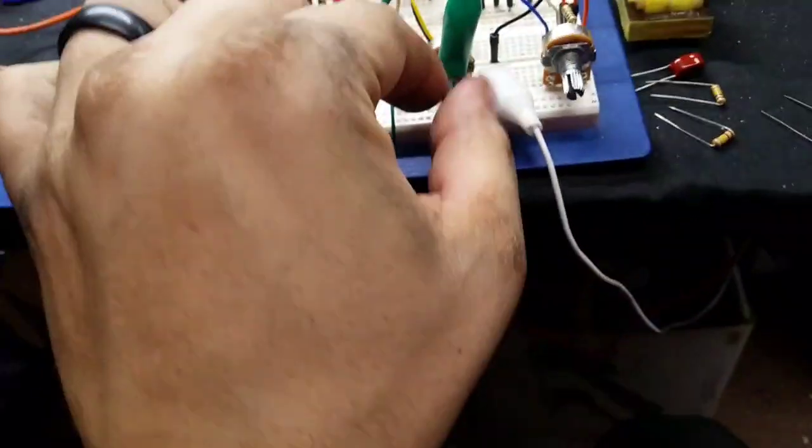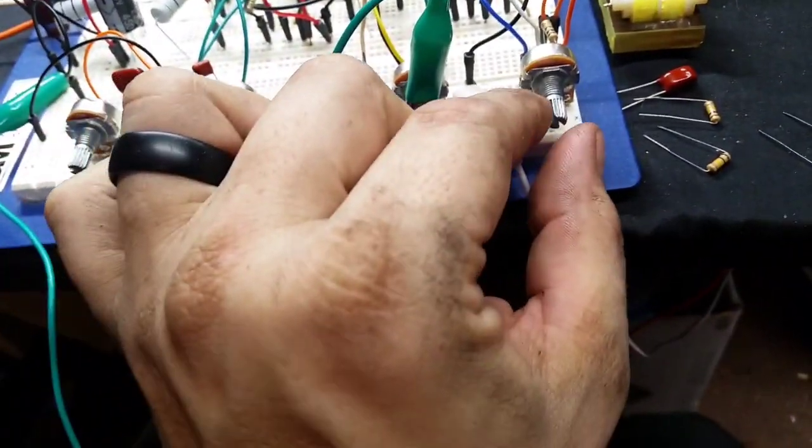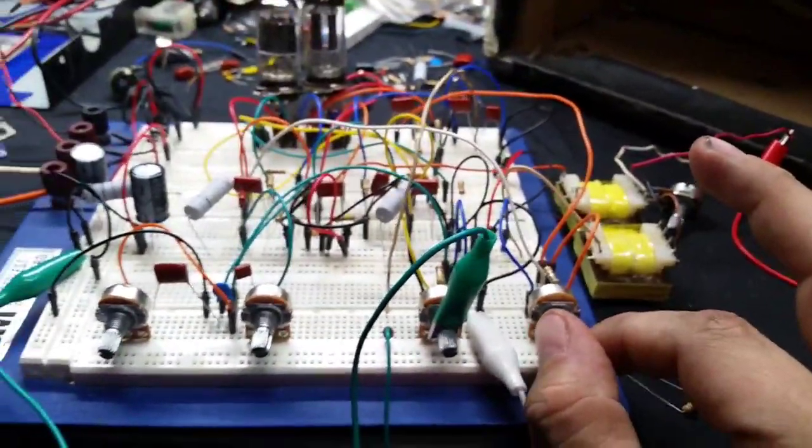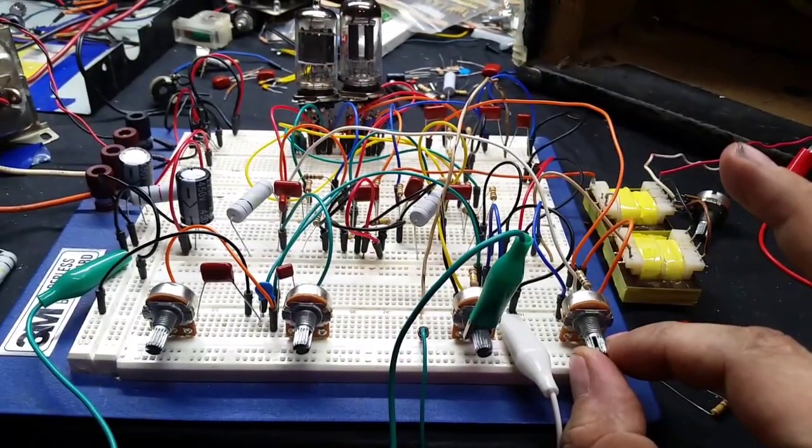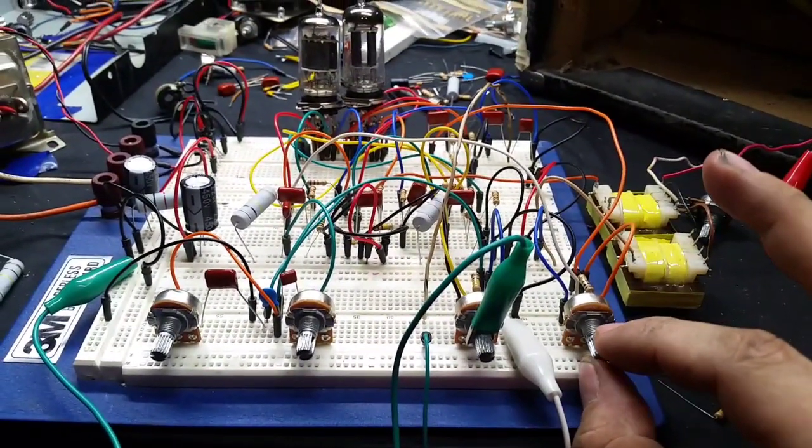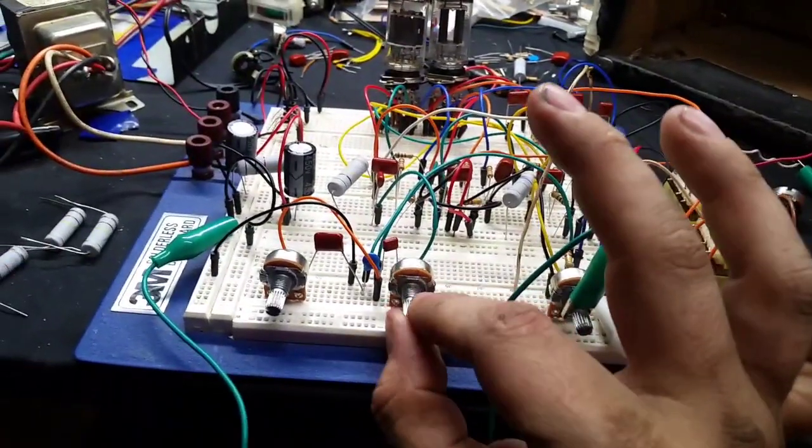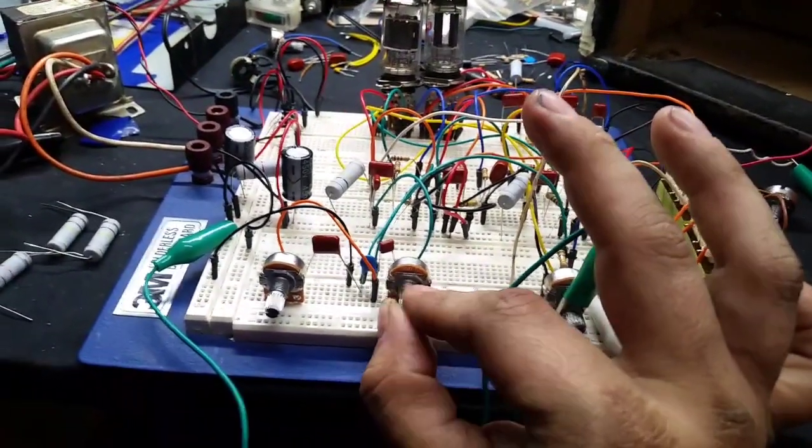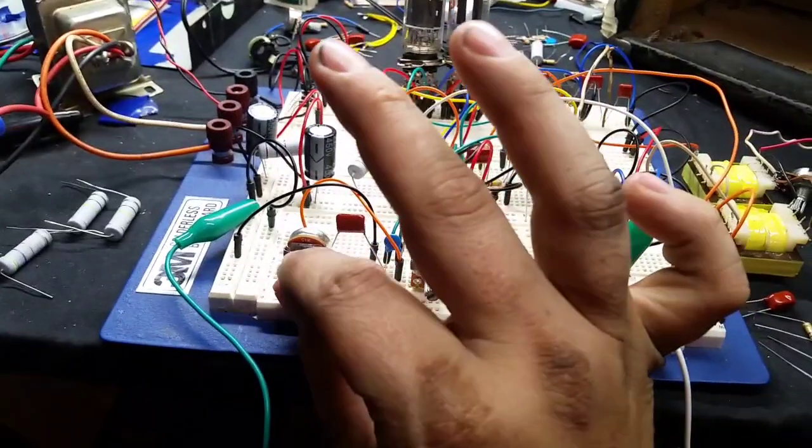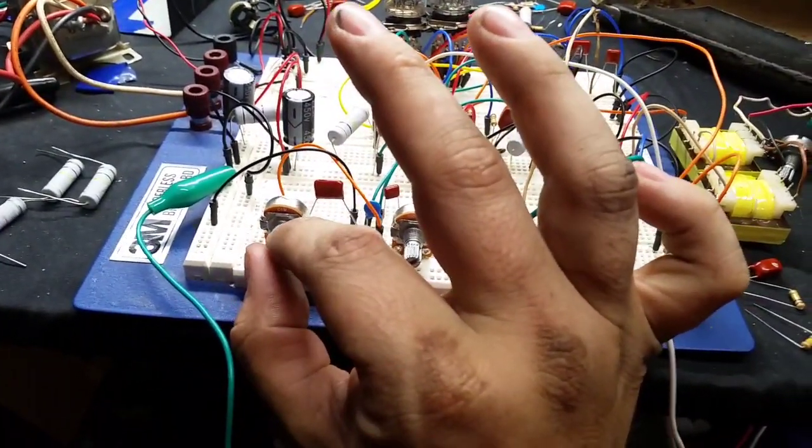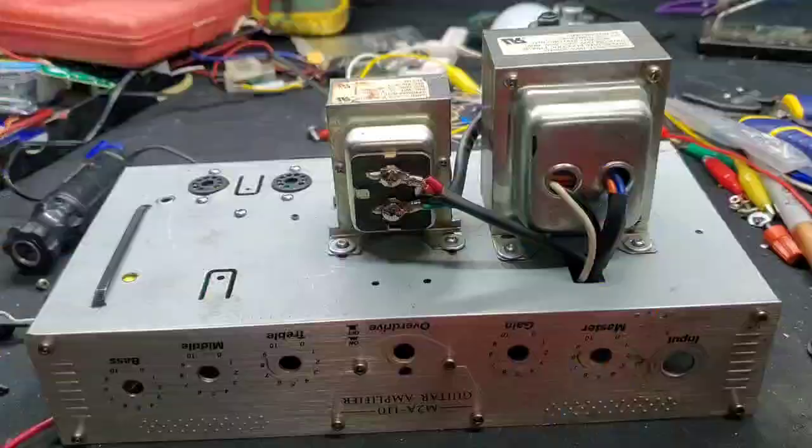Here on the breadboard I have one 12AX7 and one 12AU7 driving the speaker from the First Act amplifier through a couple of power transformers out of something. It's got a gain control, a volume control, a treble control and bass control. Down here is an orange and blue jumper that if you move them one space to the left represents closing an overdrive switch. Here it is playing All Hell Let Loose by Grim Reaper.